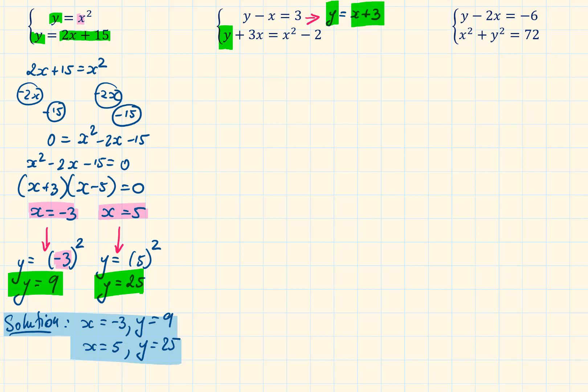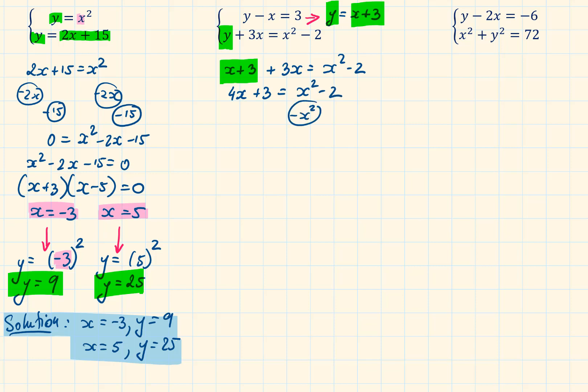The reason we do that is because we want to have only one unknown letter in the whole equation so that we can solve it. If we have two unknowns, x and y, the only way we can solve it is if we have another equation to merge it with, just like we've done in the first question. The quadratic equation will become x plus 3 plus 3x equals x squared minus 2, where x plus 3 is our y. Simplifying the left-hand side gives us 4x plus 3 equals x squared minus 2.